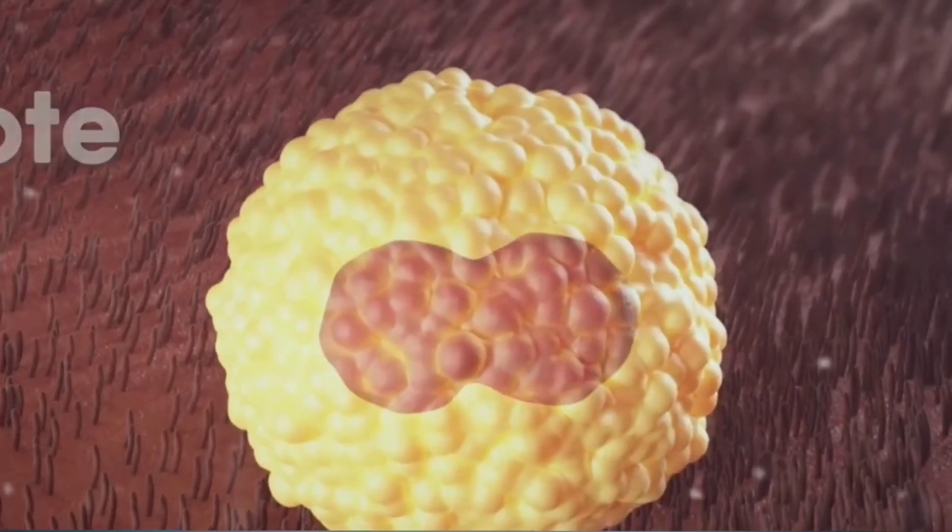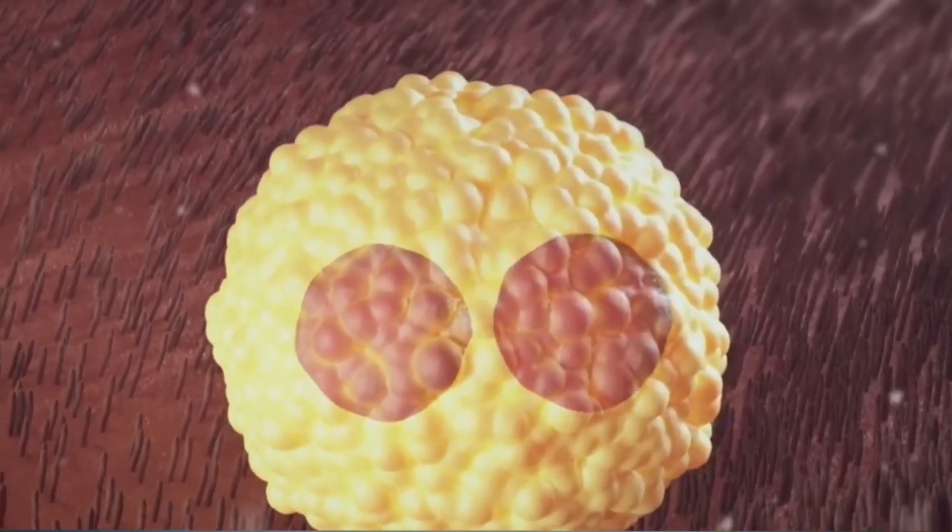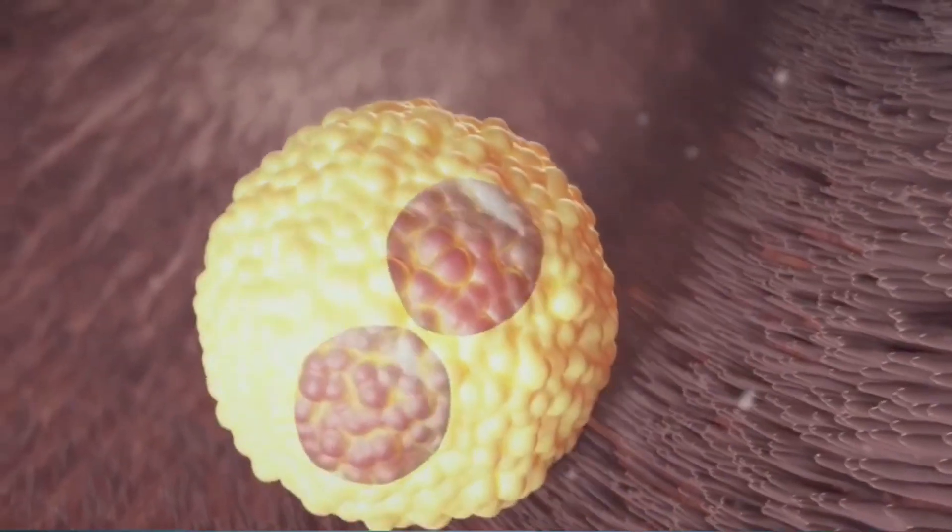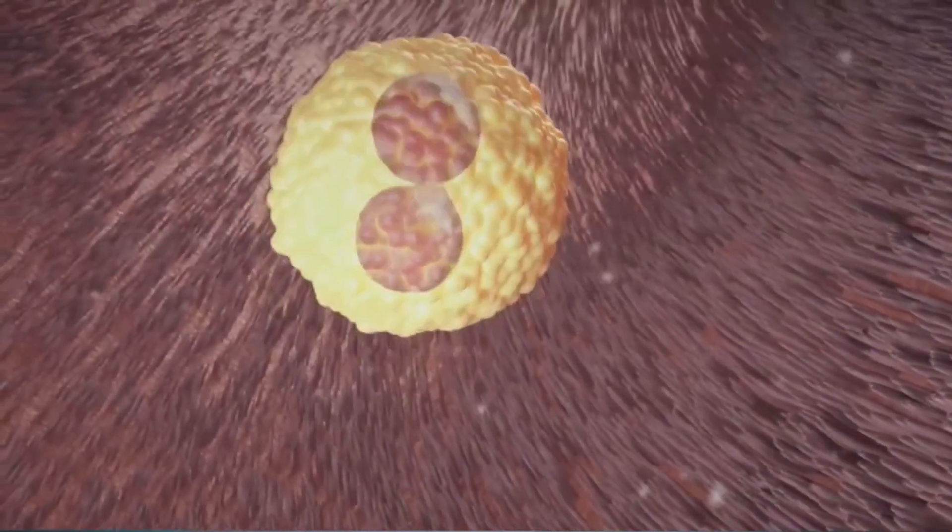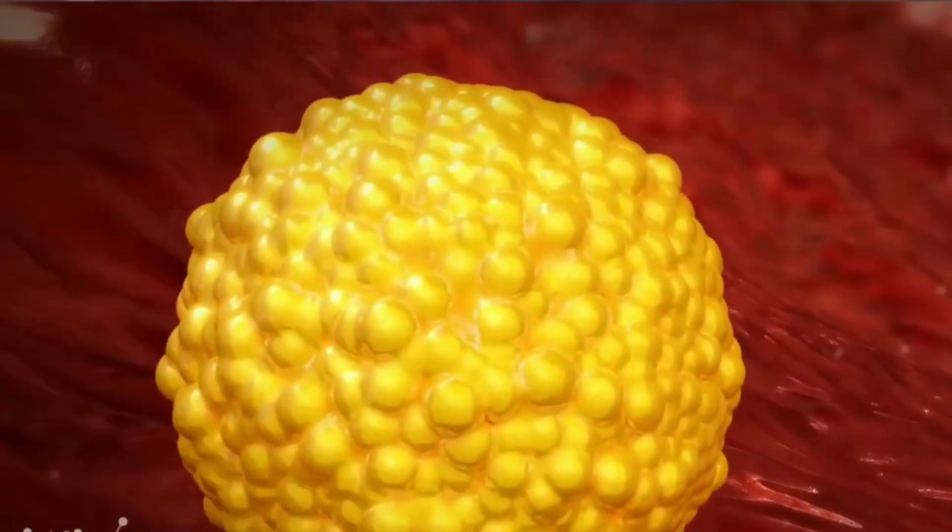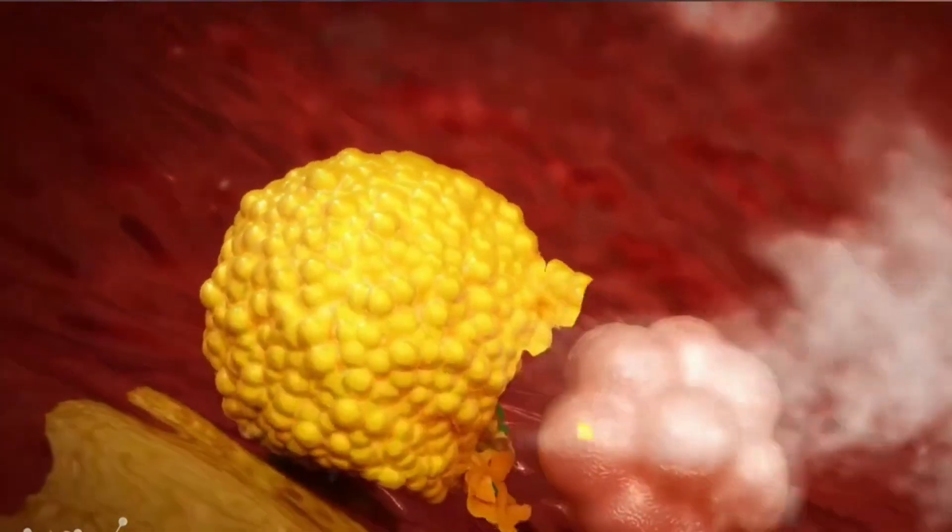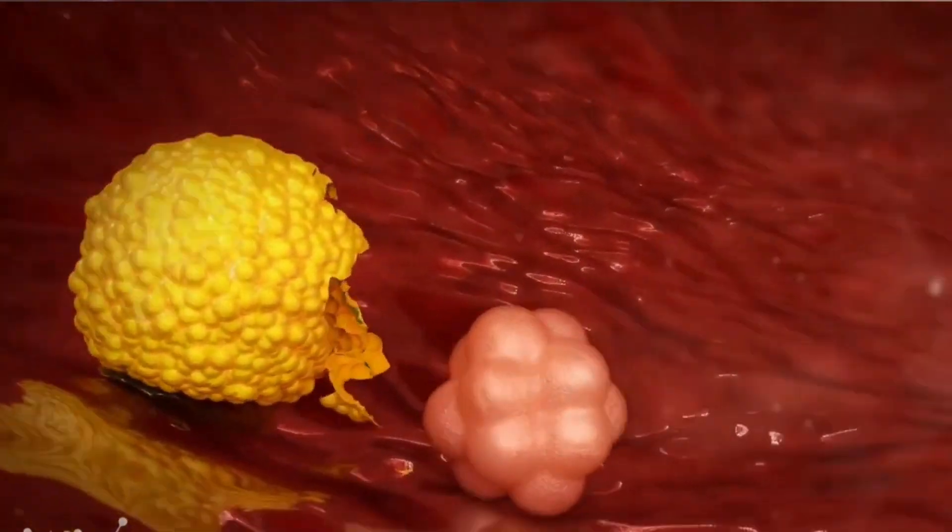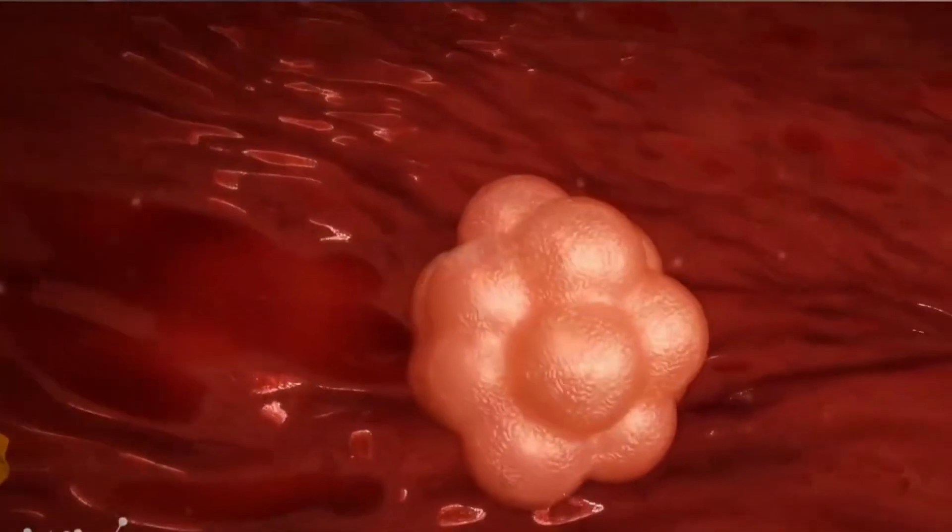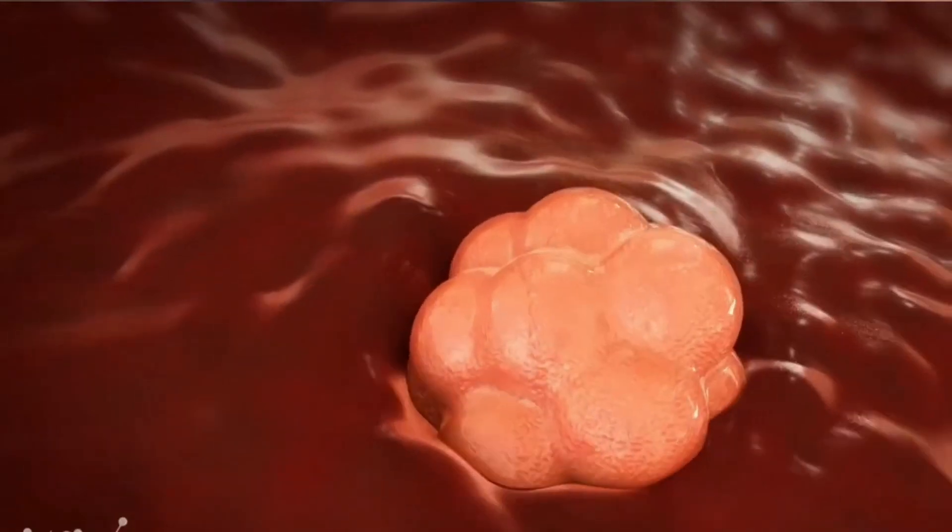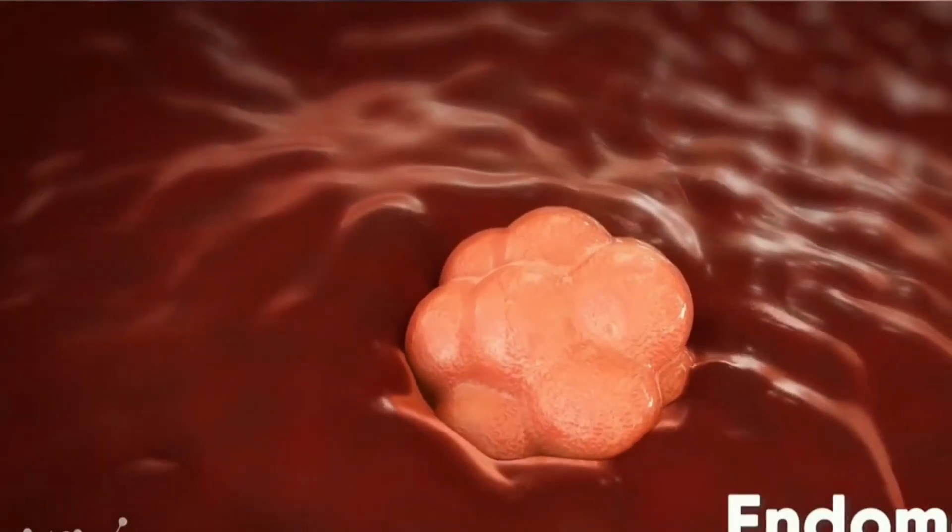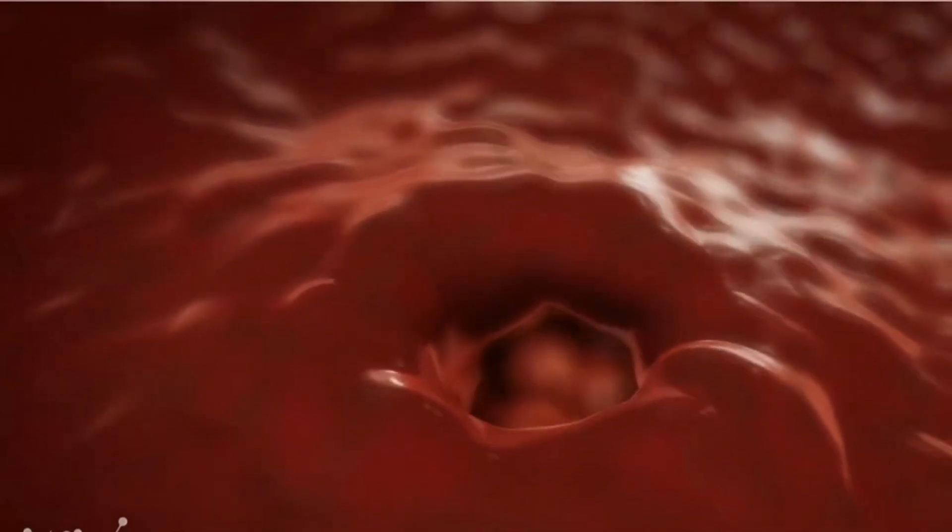The fertilized egg starts growing fast, dividing into many cells. It leaves the fallopian tube and enters the uterus three to four days after fertilization. The cells continue to divide, becoming a hollow ball of cells called the blastocyst.